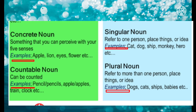Countable nouns can be counted. Examples: pencil, pencils; apple, apples; train, trains; clock, clocks. These are things we can count, so they come under countable nouns.